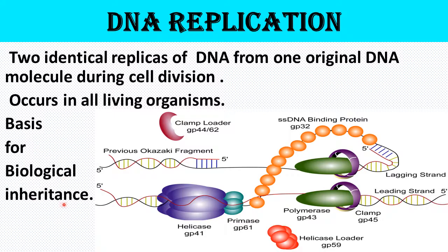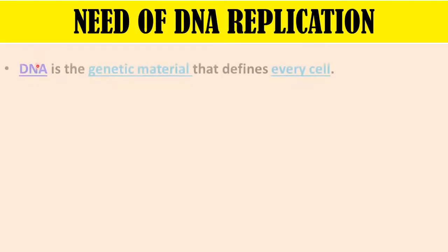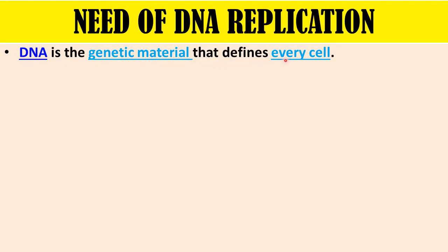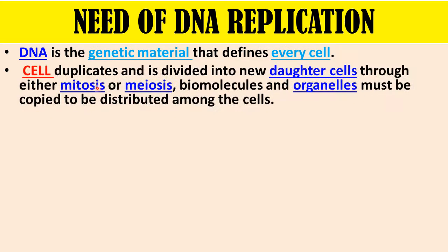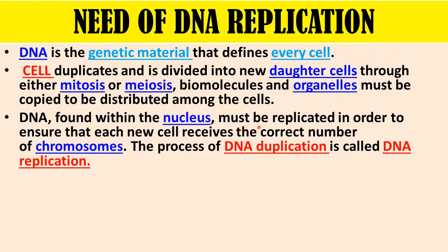Why does DNA replication need to occur? As we all know, DNA is the genetic material that defines every cell. In organisms, cells duplicate and divide into new daughter cells through mitosis or meiosis. In this process, biomolecules and organelles must be copied to be distributed among the cells — the same goes for DNA, which must be replicated.